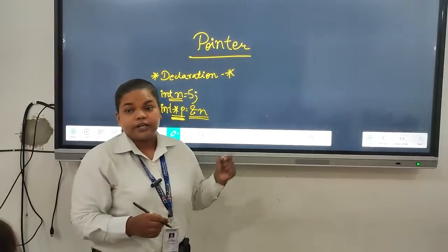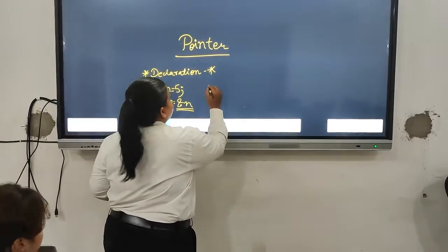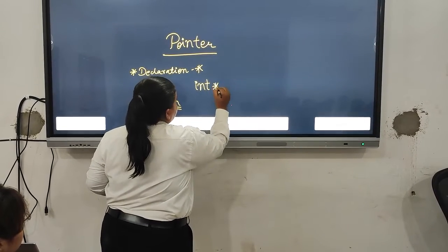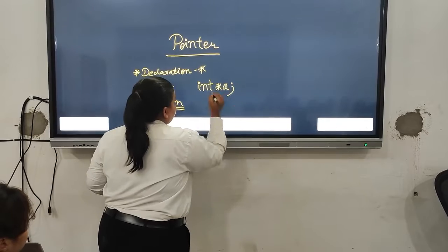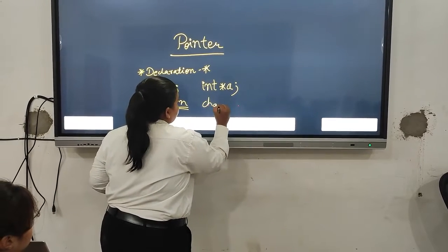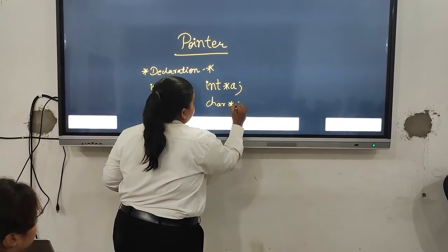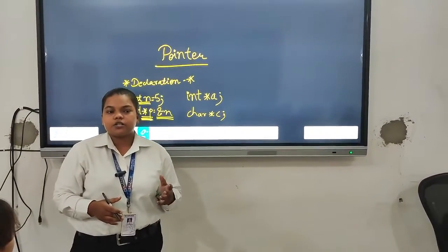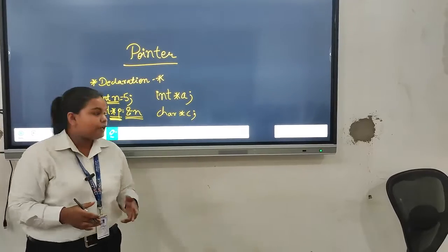Not only we can use it with int, we can use it with other kind of variables also. Like we can write int asterisk a, we can write also char asterisk c. Now here we come to the point that how by using pointer, we can print the address and the values.